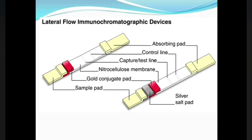If we do not get a colored line on the control, it means either the test is not valid or the technique of the assay used is not proper. The last part of the kit is the absorbing pad, which absorbs the excess liquid sample that is left unused.